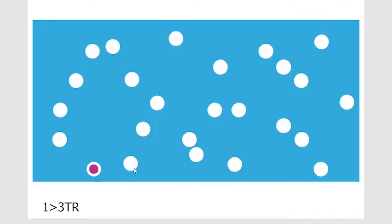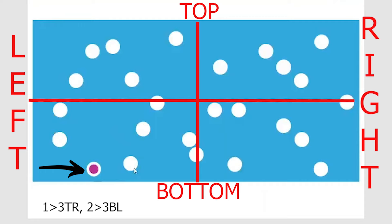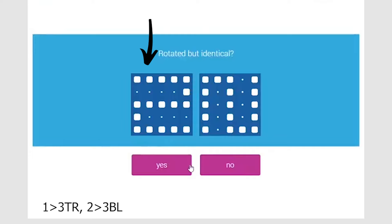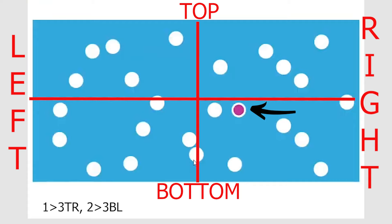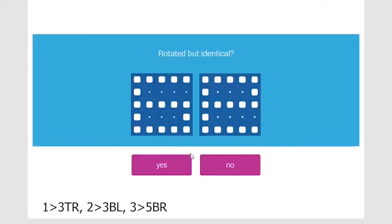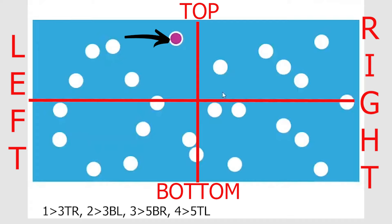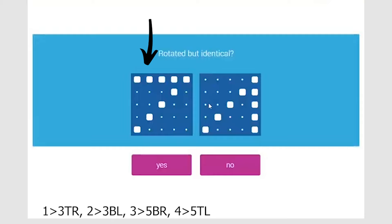Same memory grid, different dot placement: dot at third position, bottom left. Rotation: left image is number 2; rotating right image 90° anti-clockwise also gives number 2 — yes, identical. Memory: dot at fifth position, bottom right. Rotation: left image shows number 6; rotating right image twice (either direction) gives a symmetrical but not identical image — no. Memory: dot at fifth position, top left. Left image is number 7; rotating right image anti-clockwise 90° makes it a mirror image, not identical — no. Now find the location of the dots.